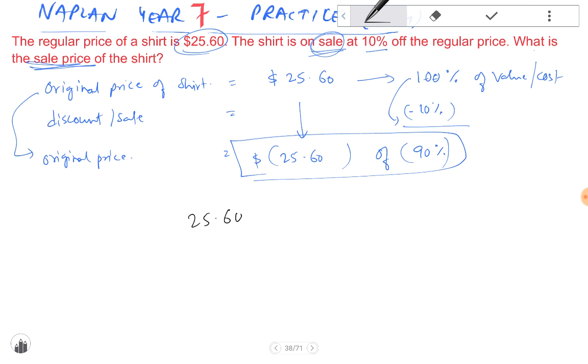So we simply take 25.60 times 90%, and we know 90% is nothing but 0.9, so 25.60 multiplied by 0.9. Take the zeros down, 54, 45 plus 5 is 50, 5, 9 twos are 18 plus 5 is 23, decimal after 1 to 3 places. So the answer is $23.04.